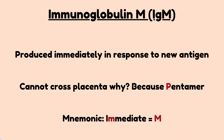Next is immunoglobulin M. It is produced immediately in response to a new antigen, and it is produced even faster than IgG. It cannot cross the placenta because it is a pentamer — meaning it is composed of five large molecules — so its large size prevents it from crossing the placenta. The way to remember this immunoglobulin is the word 'immediate': immediate production of IgM, where the letter M stands for immunoglobulin M.